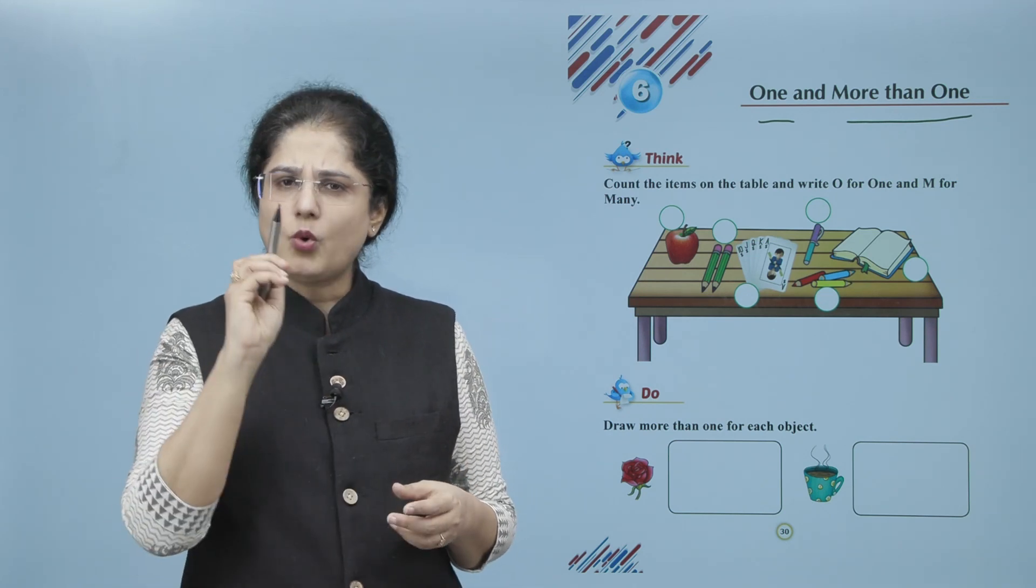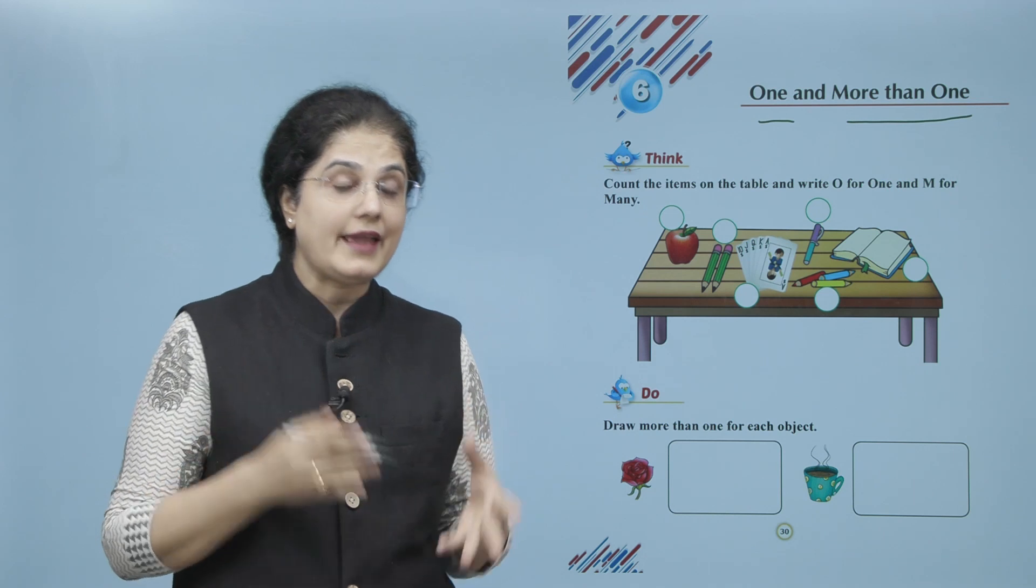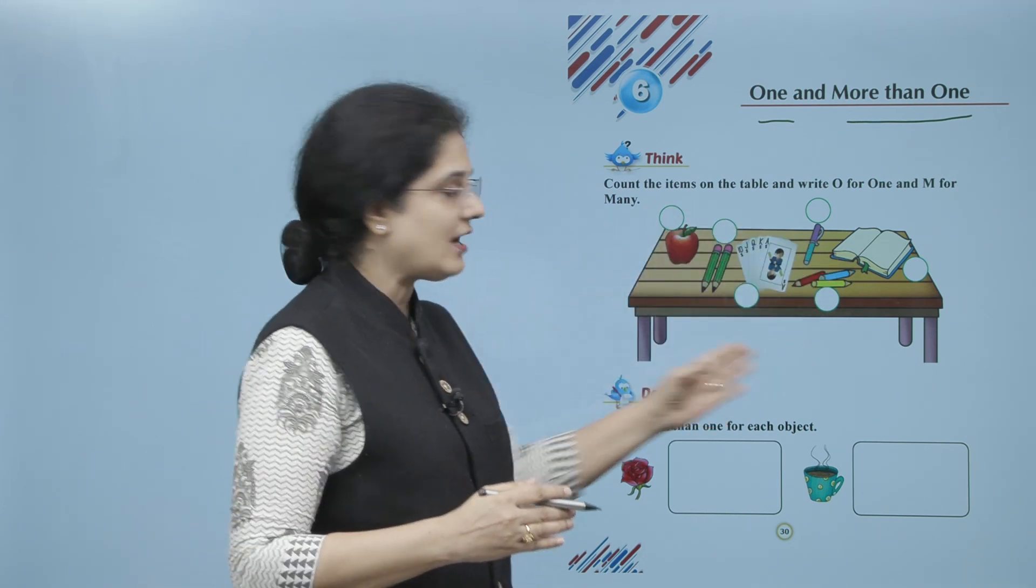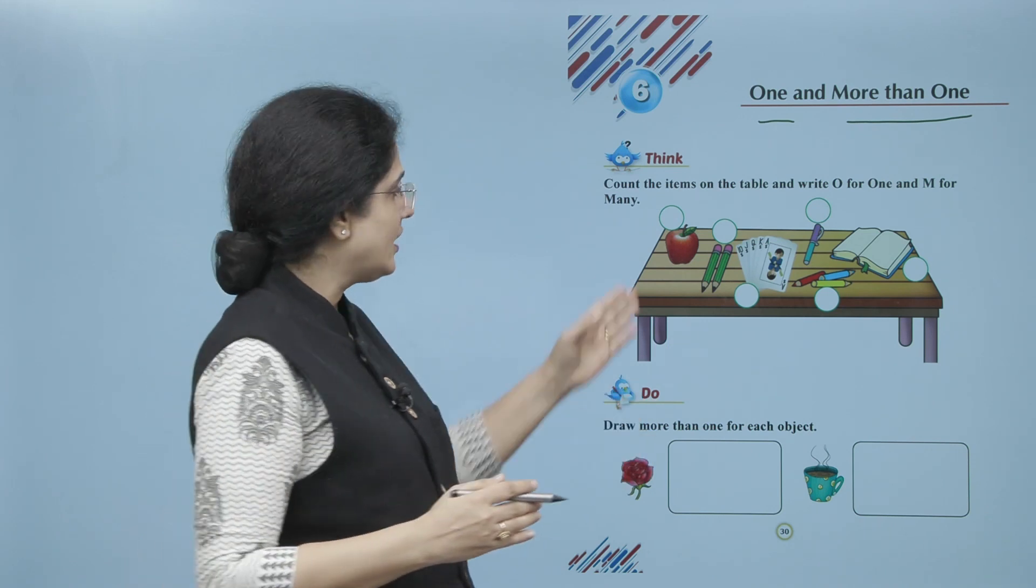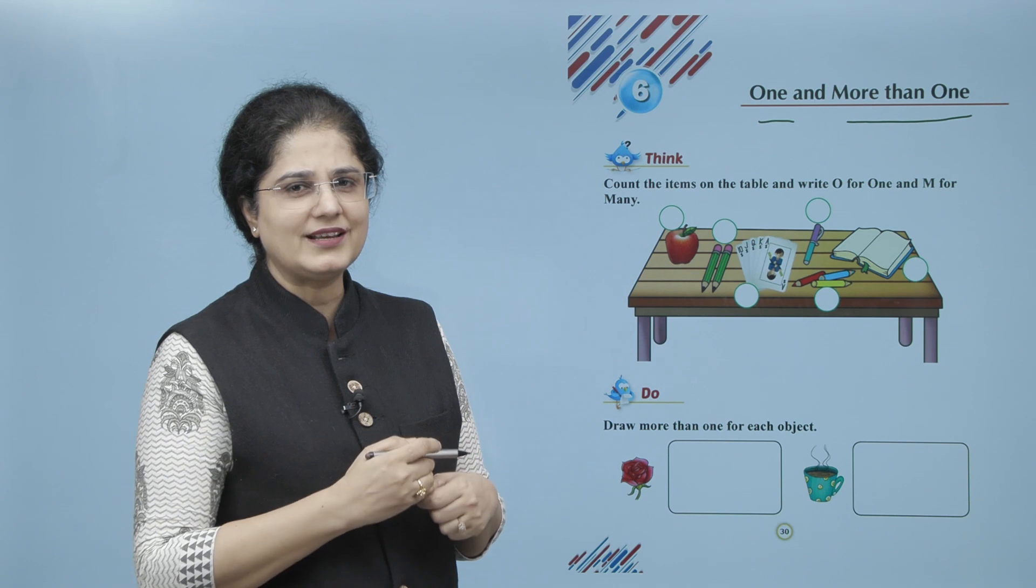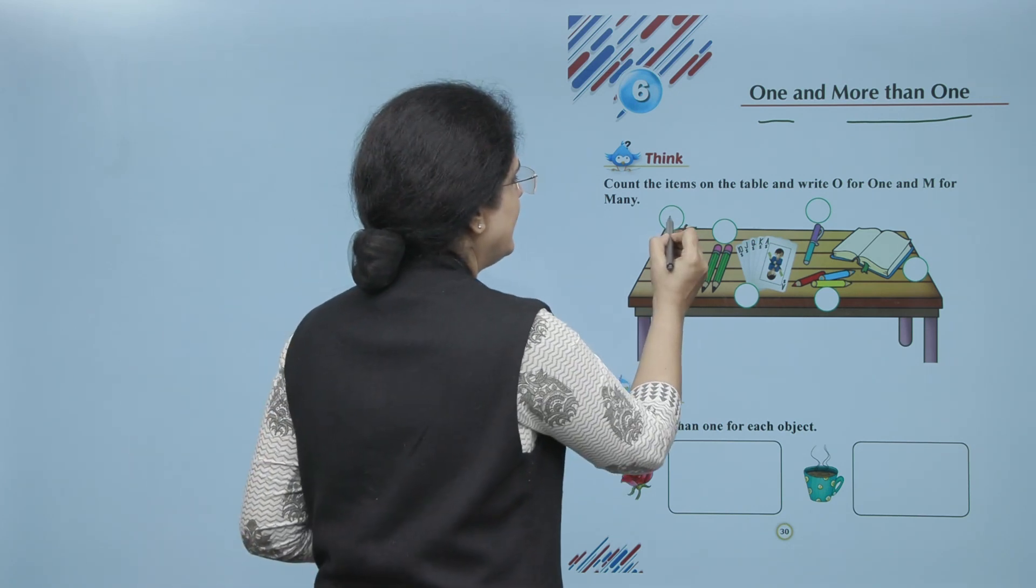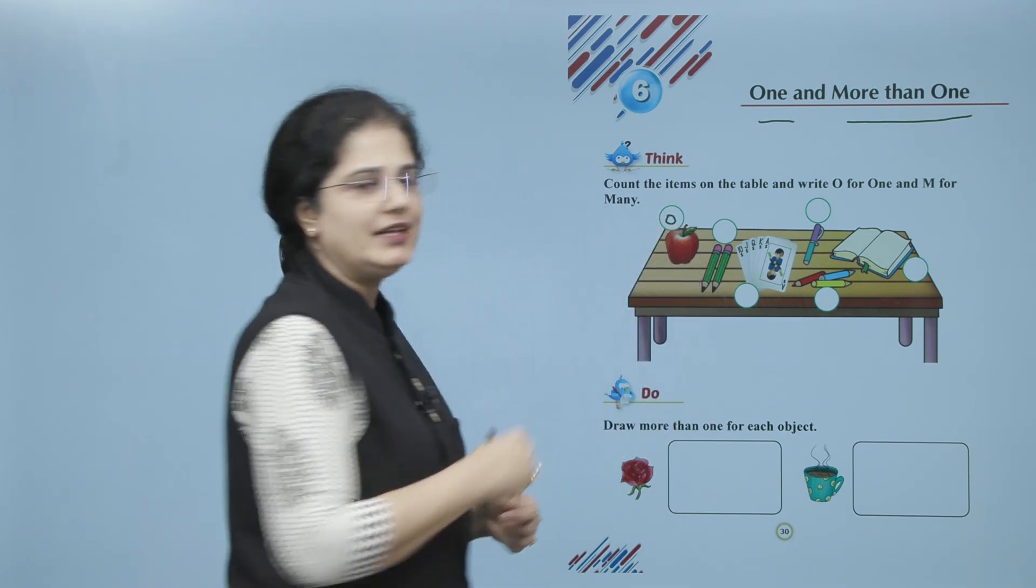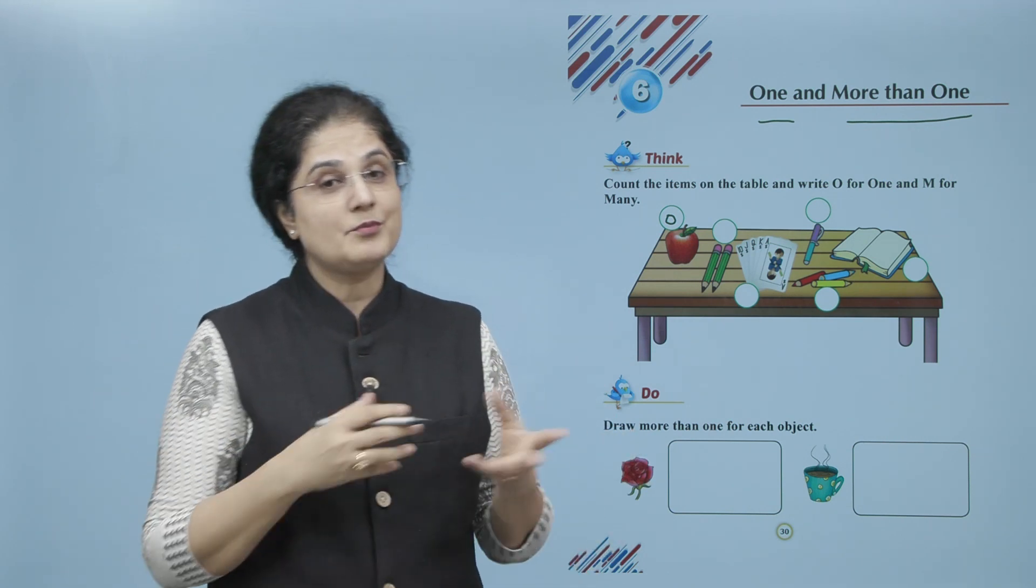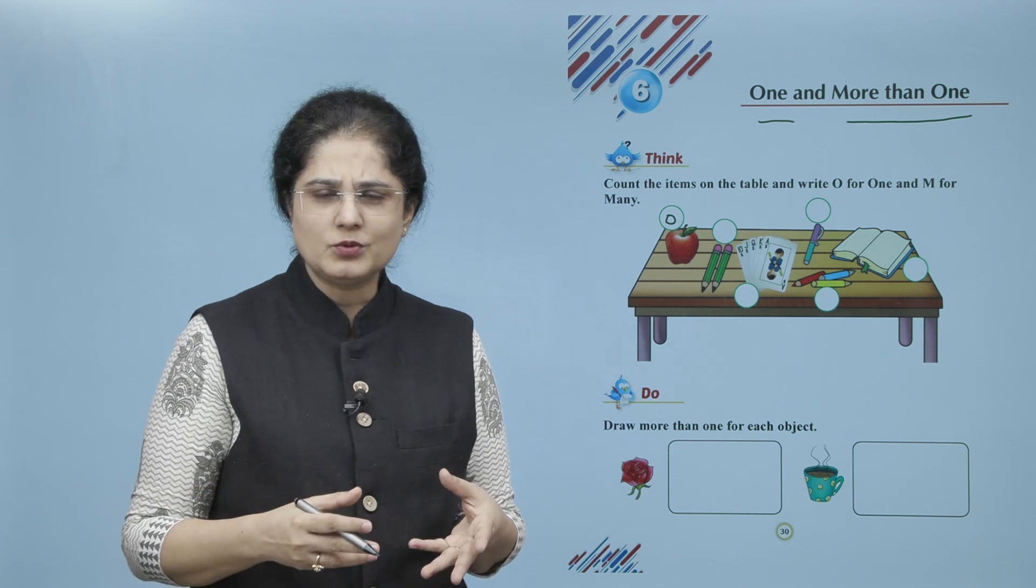Now what do we have to do? Count the items on the table and write O for one and M for many. Ab is table pe hamein kya kya items nazar aa rahi hai? Ye apple hai, to apple one hai ya more than one hai? One hai, to hamein kya karenge? Is ke liye O likh denge.